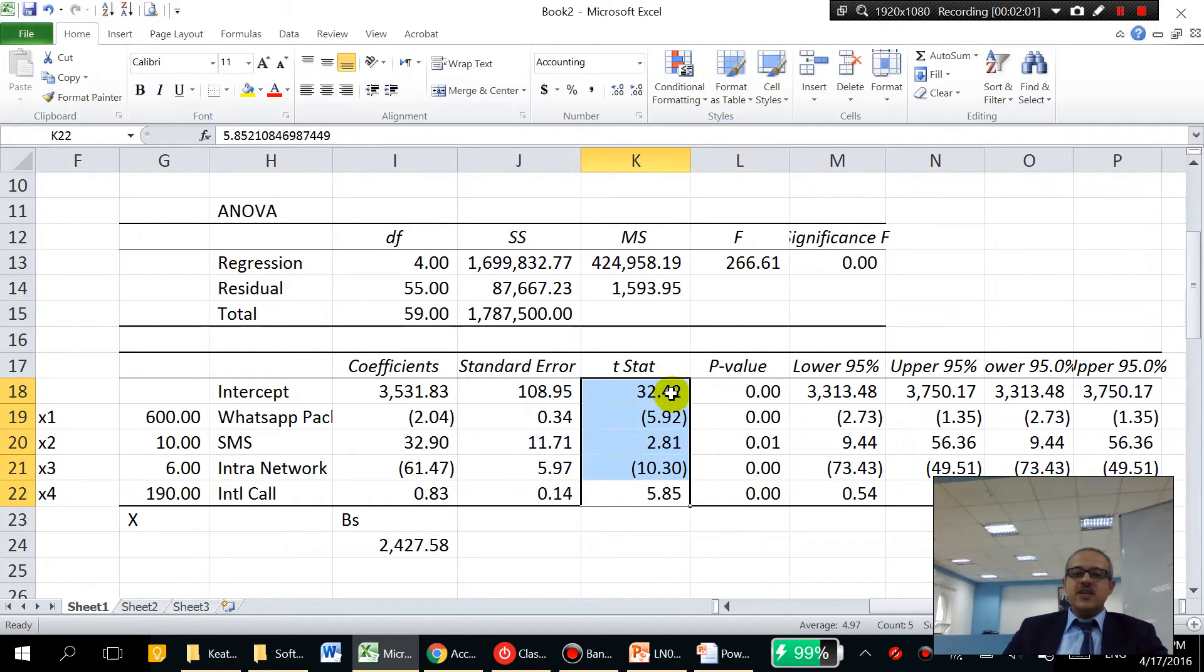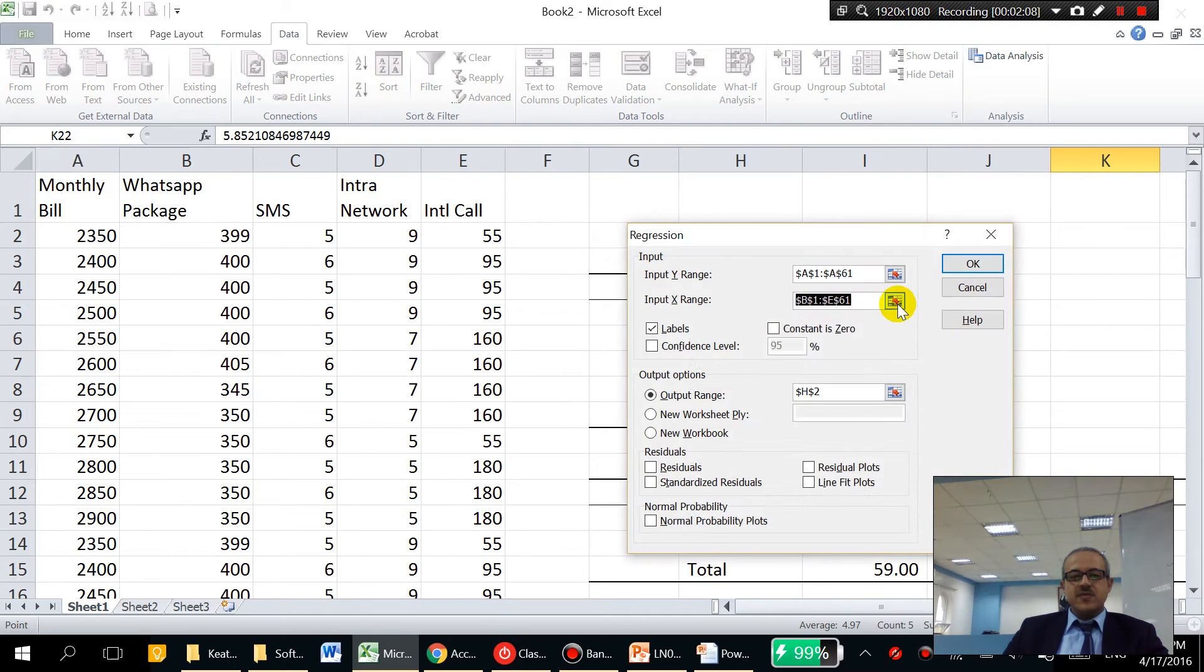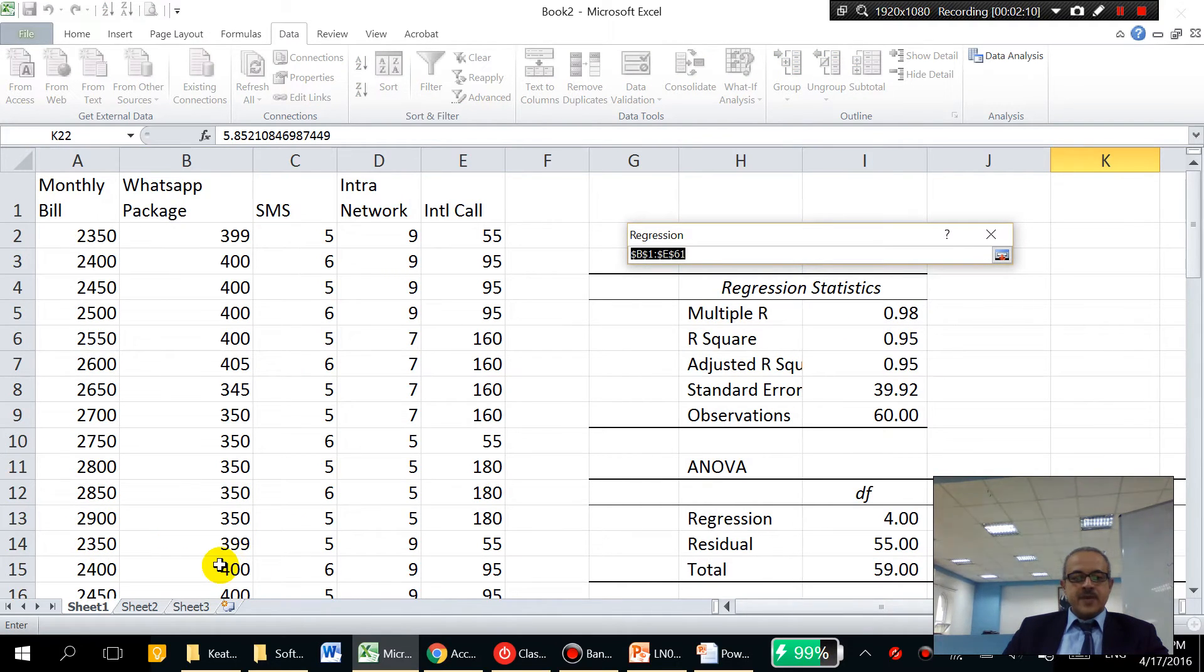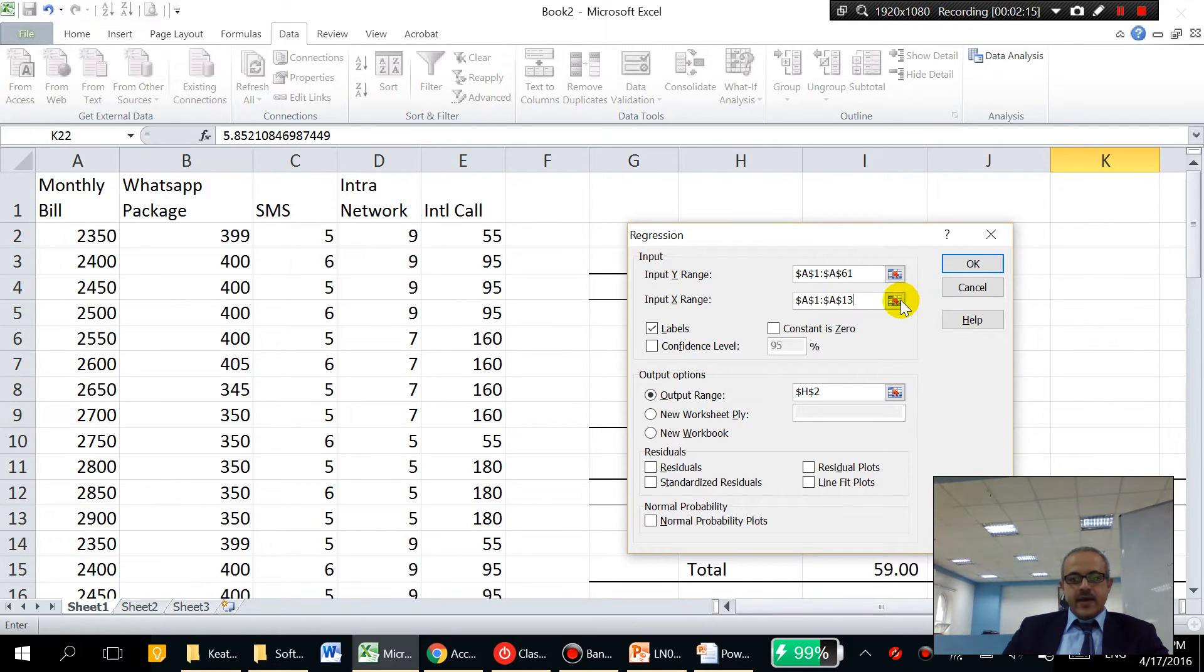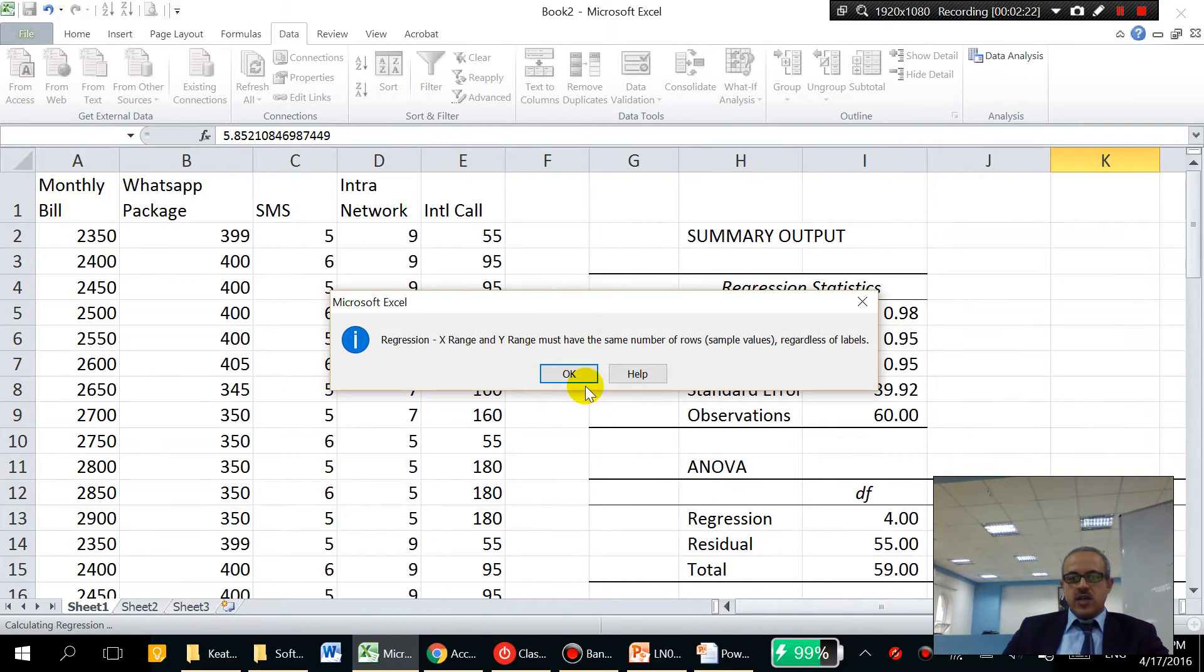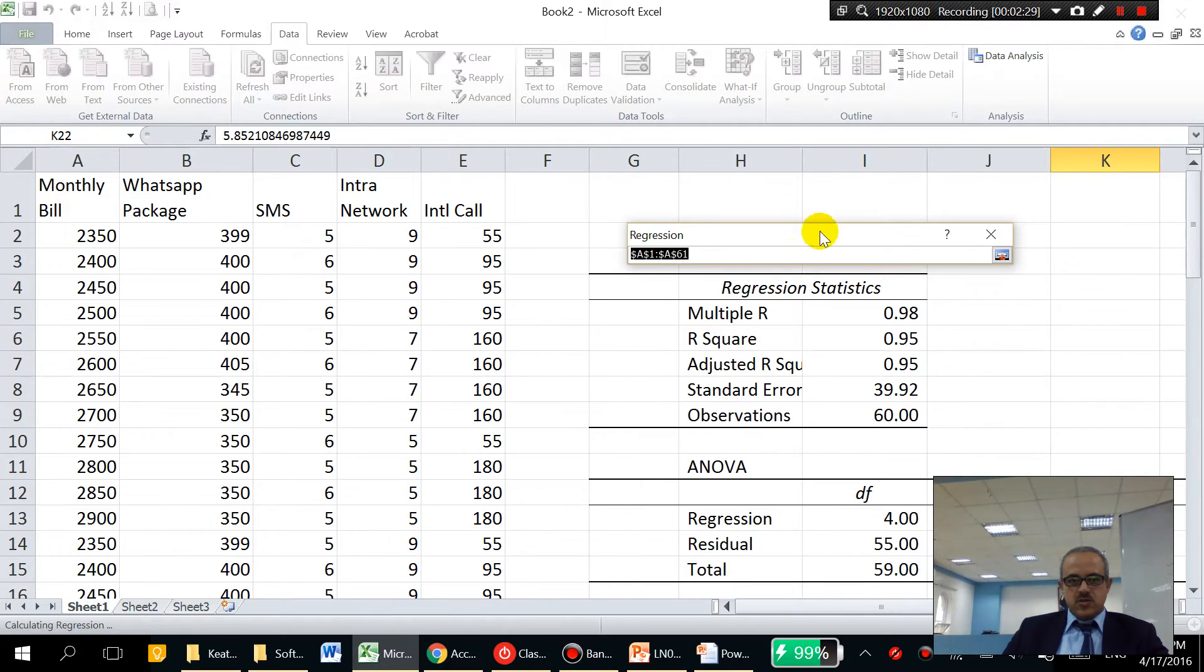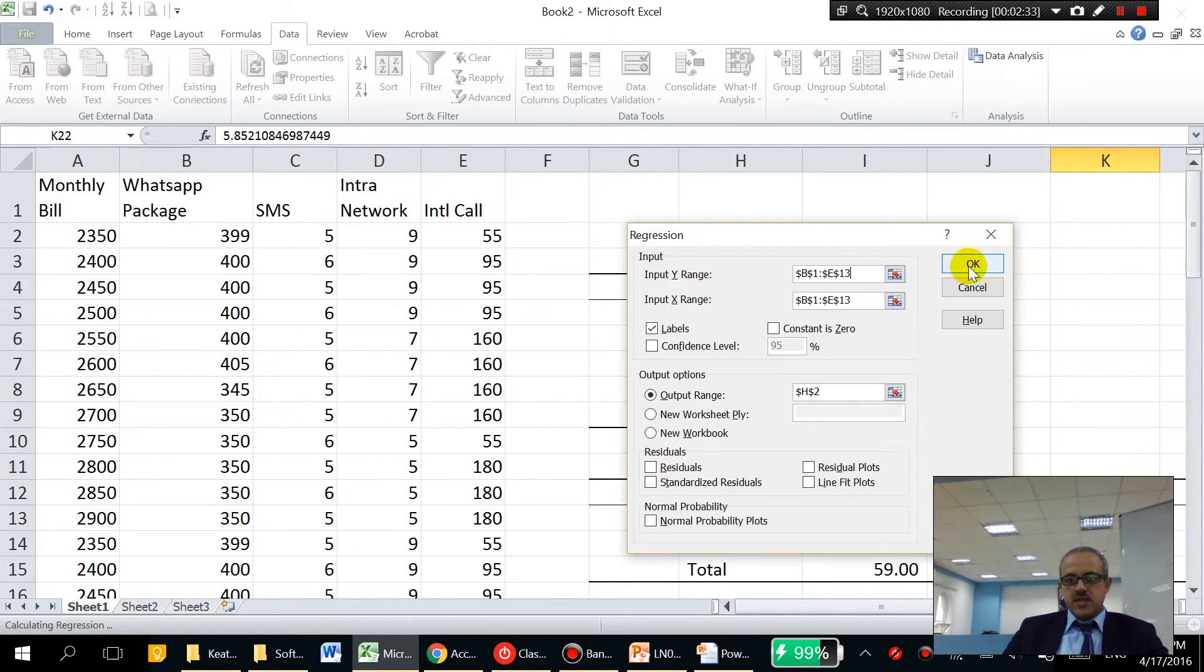But these are all above two, so they're all significant. But maybe if I do another regression, let me do another regression where we can see that we will have something that is insignificant. If I do this number, I'll use just part of the data and see how that's going to work.